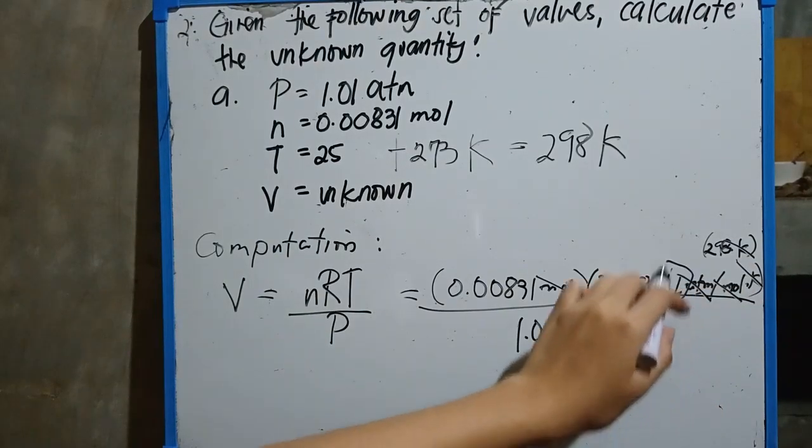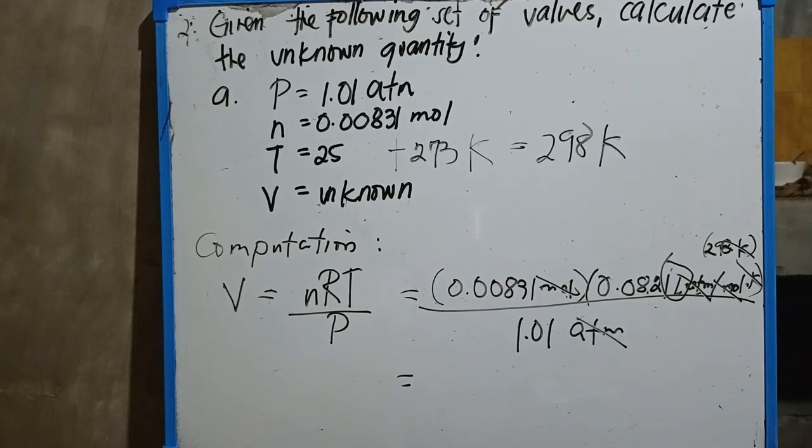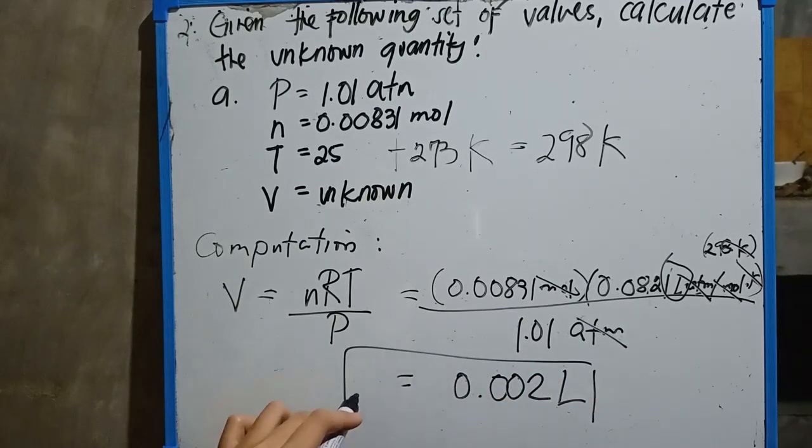What's left is our liter. 0.00831 multiply to 0.0821 multiply to 298, divide by 1.01. So the answer is 0.002 liter.